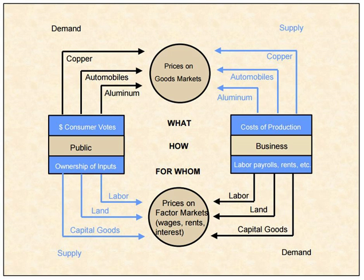Rather, for Marx, price equals the cost of production plus the average rate of profit. So if the average rate of profit is 22%, then prices would reflect cost of production plus 22%. The perception that there is a transformation problem in Marx stems from the injection of Walrasian equilibrium theory into Marxism, where there is no such thing as equilibrium.